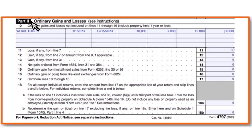Part 2 covers ordinary gains and losses. When we talk about ordinary versus non-ordinary, you're talking about tools that you bought this year and then sold this year. In our case, we have $3,000 in that category.